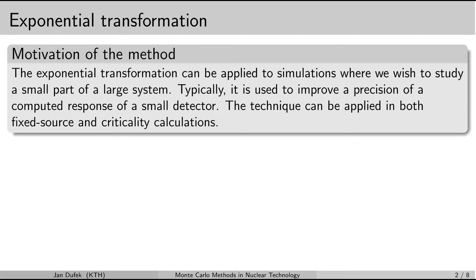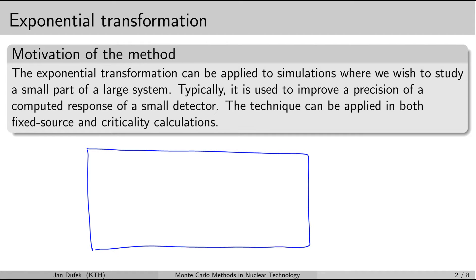The Exponential Transform method is designed for a special type of problem in which we are primarily interested in a very small part of a very big system. Imagine you have a big system and we are only interested in a detector response, placing the detector at some part of the system. The volume of the detector is very small compared to the volume of the whole system, so you may have to simulate many billions of neutron histories in order to get a few of them to pass through the small detector volume.